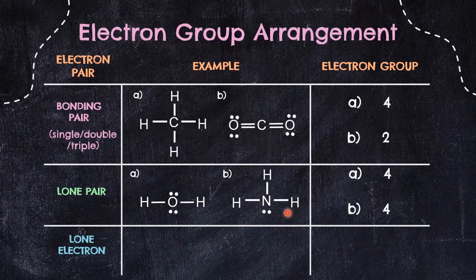For a lone electron, also called an unpaired electron, it is counted as 1 electron group. For example, in NO, looking at the lone electrons, we count 1, 2, and 3, giving 3 electron groups altogether.